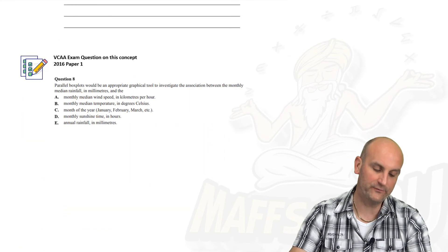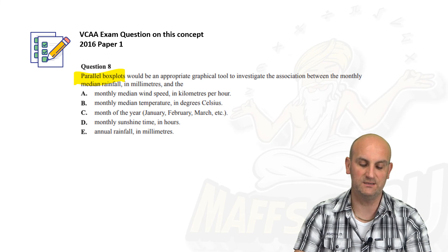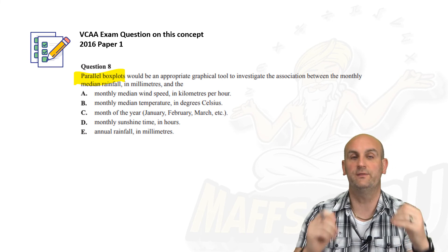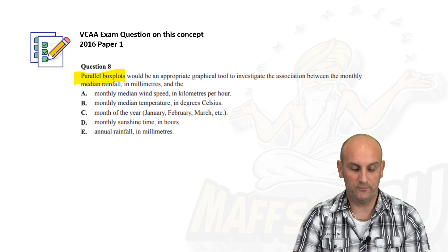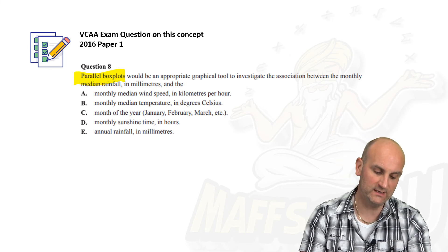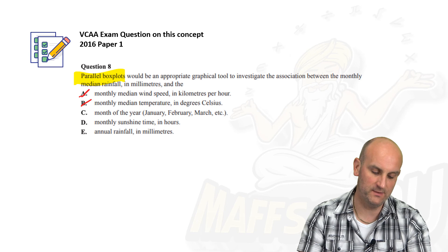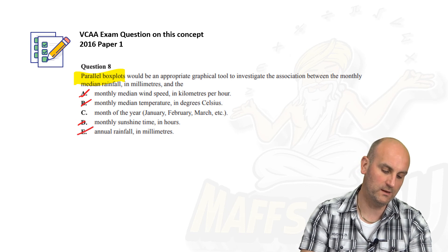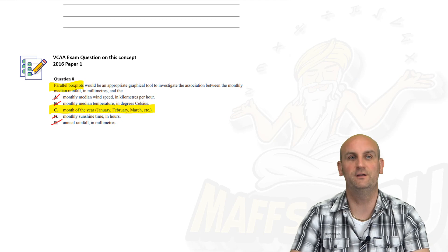This is the question that absolutely tricked me. It reads: parallel box plots would be an appropriate graphical tool to investigate the association between monthly median rainfall in millimetres and... what? Since parallel box plots are used for comparing numerical data across categories, the other variable has to be categorical. Monthly median wind speed in kilometres per hour — no, that's numerical. Median temperature — no, numerical. Month of the year — yes, that's categorical! Monthly sunshine hours — numerical. Annual rainfall — numerical. So the correct answer is C: month of the year. I was so annoyed when I couldn't get that answer, but hopefully you've learned from my experience.